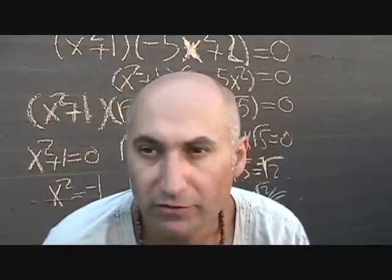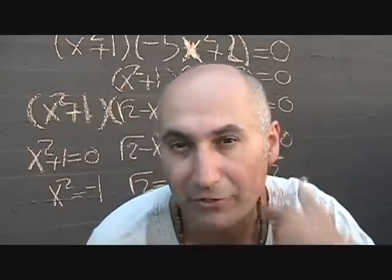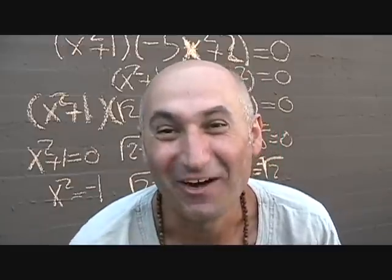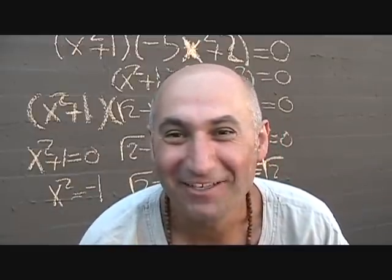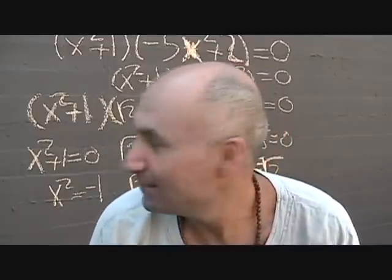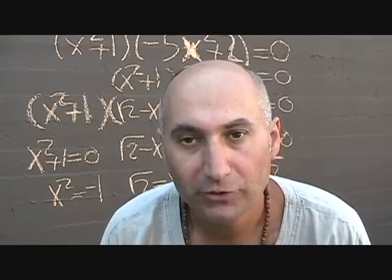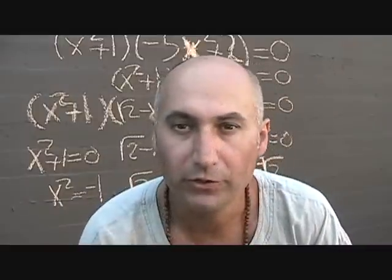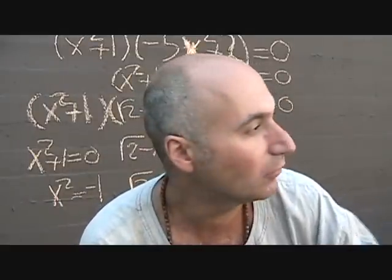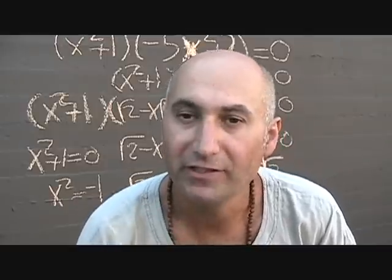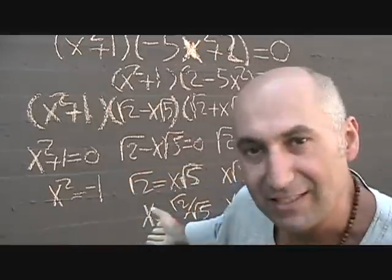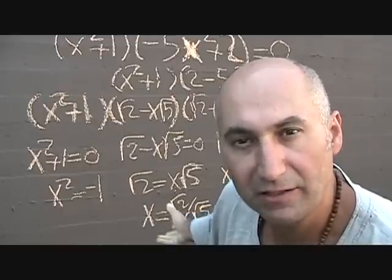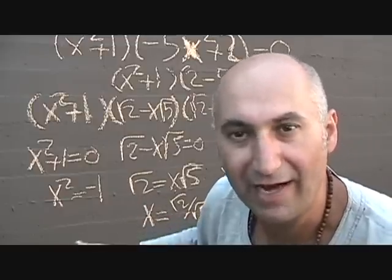Now, if you remember from series 2, we have to rationalize the denominator, but we're not going to do that right now. This has been the factoring of complex trinomials combined with the difference of squares. From here, when we get into graphing polynomials, we're going to start graphing, solving, and figuring out what these solutions mean — they're giving us the x-intercepts, the solutions, the factors, and the roots.